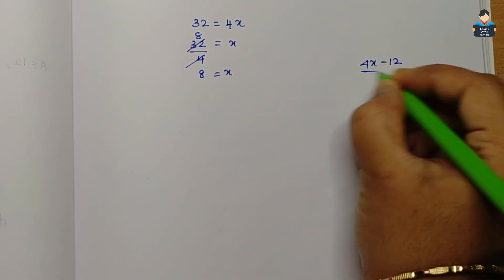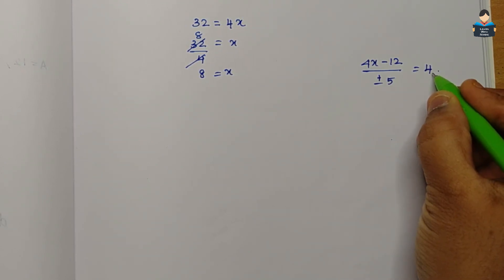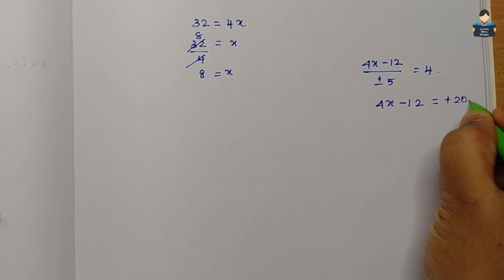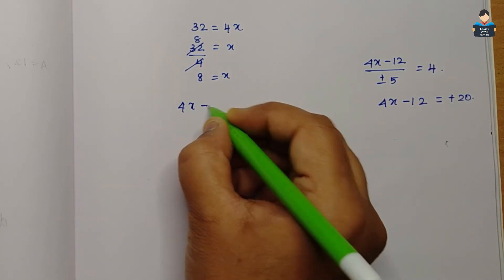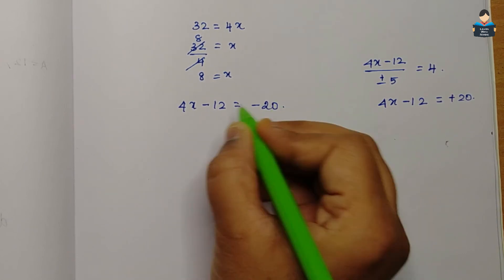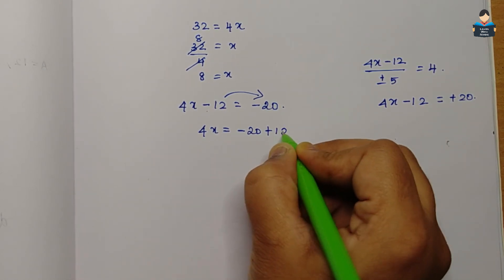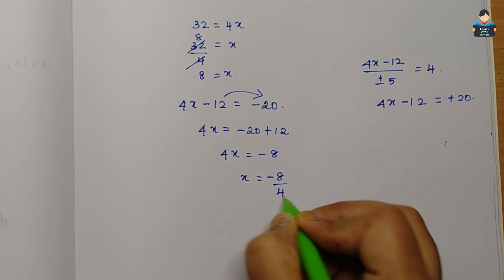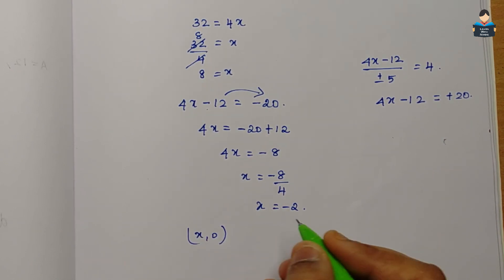So, 4x minus 12 by plus or minus 5 is equal to 4. So, 4x minus 12 is equal to plus 20 — which gives x equal to 8. And in the other case, 4x minus 12 is equal to minus 20. So, x is equal to minus 2. So, x end values: 8 and minus 2. These are the final answers.